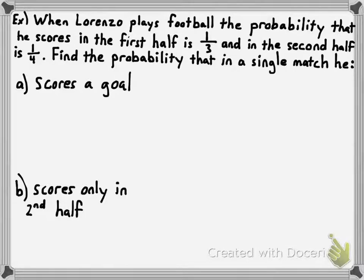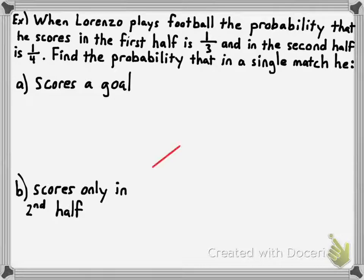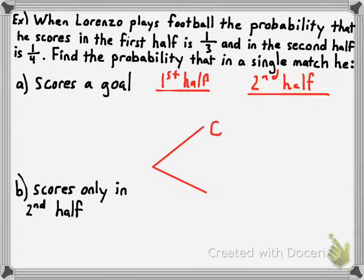We want to find the probability that he scores a goal, and also that he scores only in the second half. The trick to any probability question is understanding what the sample space looks like — all the possible outcomes. We have two events: the first half and the second half. I'll show all possible outcomes for the first half: either he scores a goal (G) or he doesn't score (G complement).